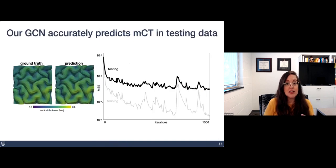Using this robust training data set that includes some combinations of this variation in the parameters, we trained our graph neural network. We found that it is actually able to accurately predict the modified cortical thickness in our testing data. We reserved a few of the cases of our simulations for testing and then used the rest for training.